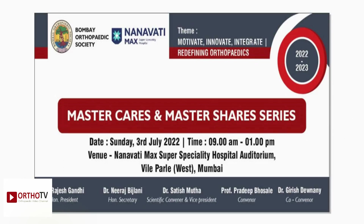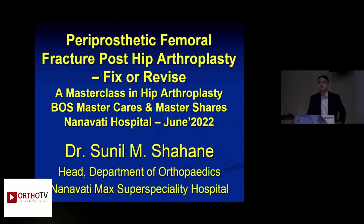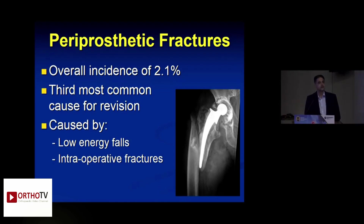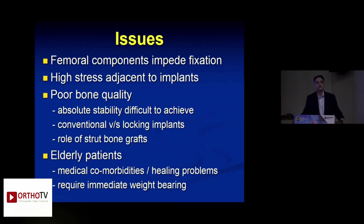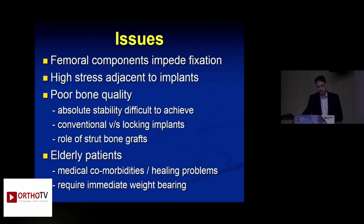With an aging population and the number of hip replacements on the rise, the incidence of periprosthetic fracture is going to increase. Today it's the third most common cause for revision. These are complex injuries because of a number of issues: you have a femoral component position which impedes fixation, high stress adjacent to the tip of the stem, generally poor bone quality, and most patients are elderly with medical comorbidities.